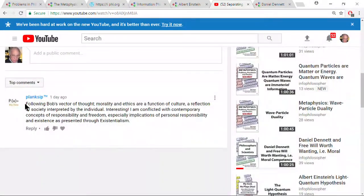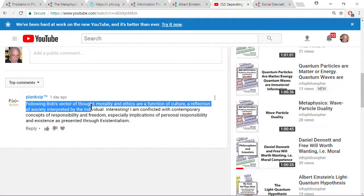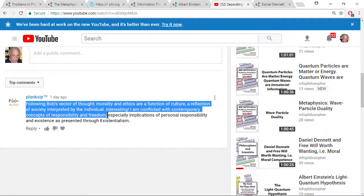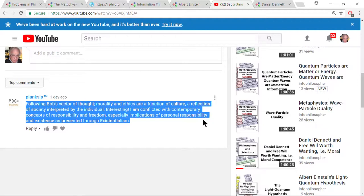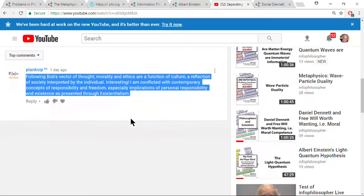The interesting thing here today is that one of my commentators out there named, or at least with a handle, Plank Sip, I hope I'm pronouncing that correctly, has told us something. He says, Following Bob's vector of thought, morality and ethics are a function of culture, a reflection of society interpreted by the individual. And he says, interesting, thank you. And he says, I'm conflicted with contemporary concepts of responsibility and freedom, especially implications of personal responsibility and existence as presented through existentialism.